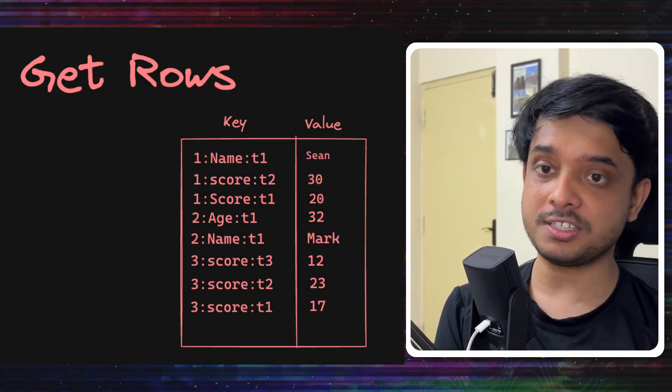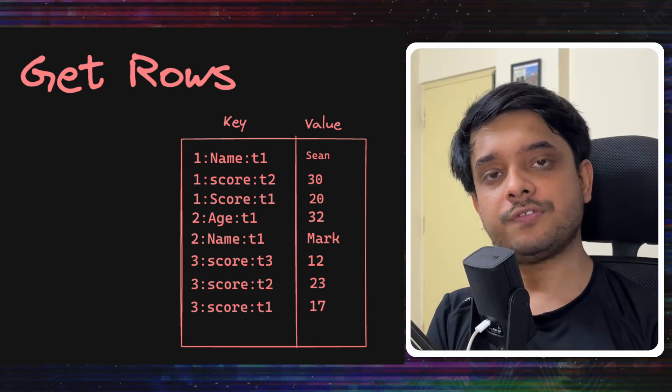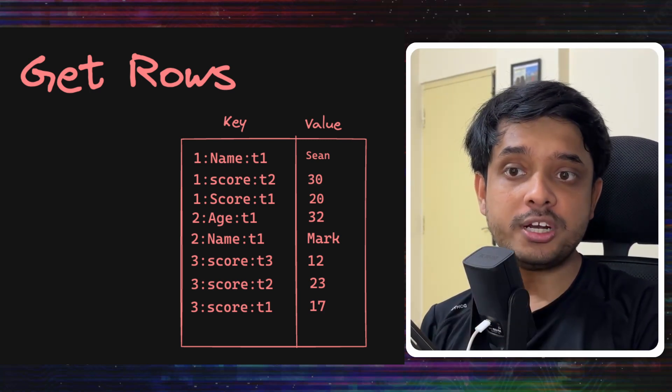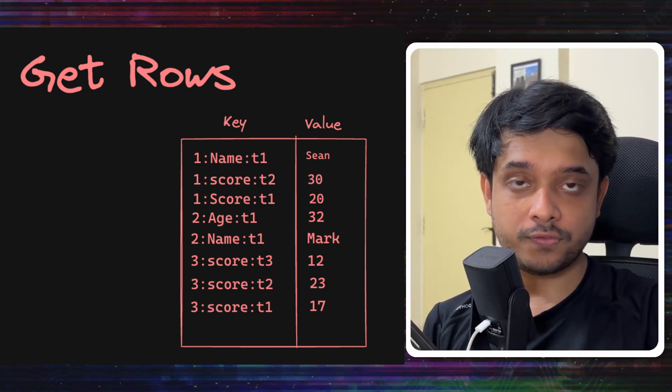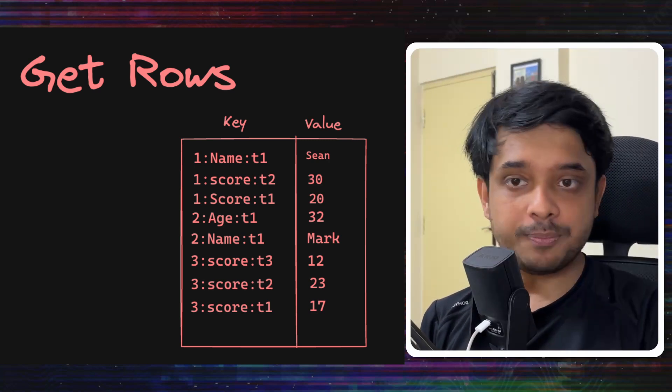Now, let's see how we can do some operations on this database using RocksDB. The first operation we want to do is get rows, which would get one or more rows from the data set.